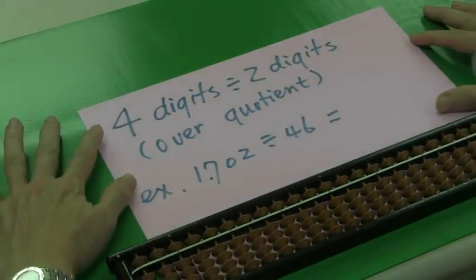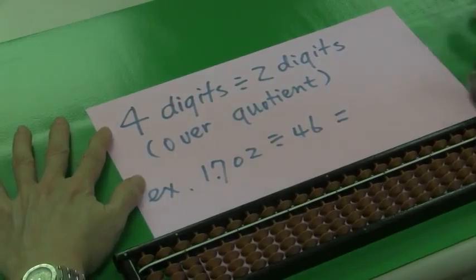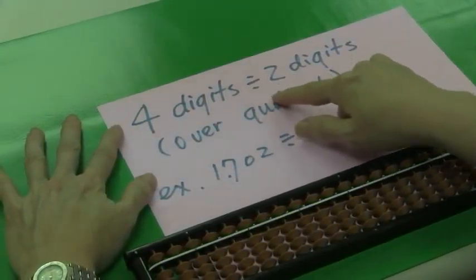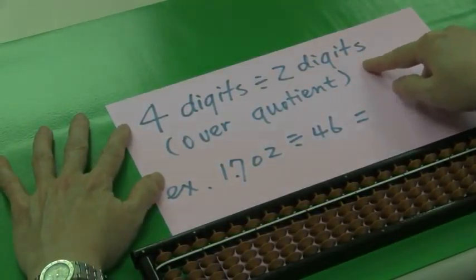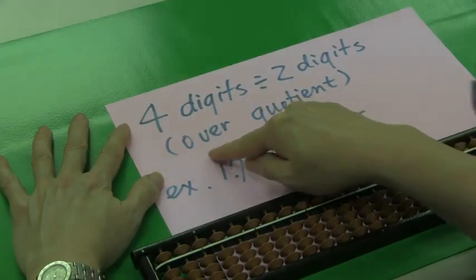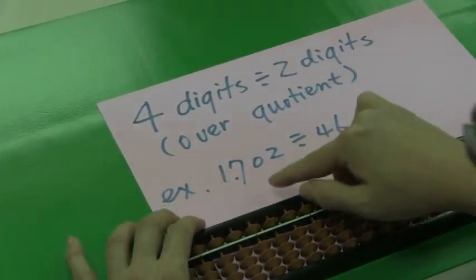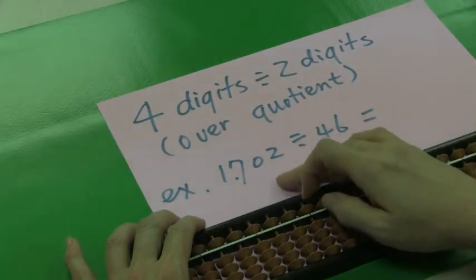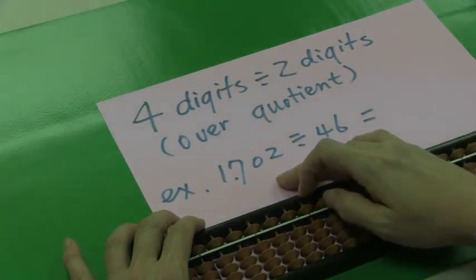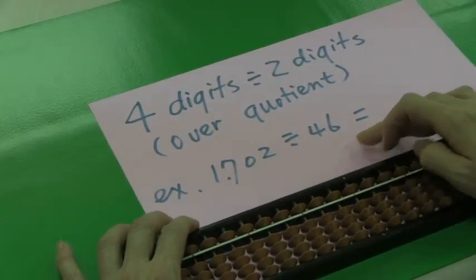Now we are going to learn how to do division, four digits divided by two digits, also with over-quotient in it. Example is 1,702 divided by 46.